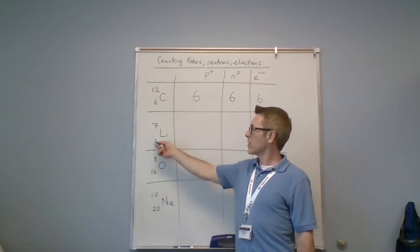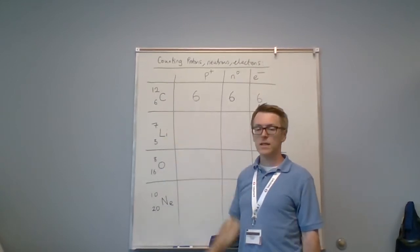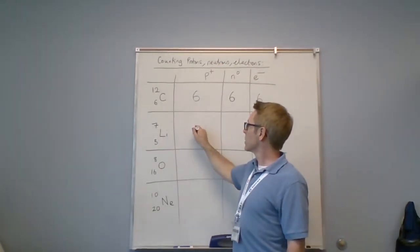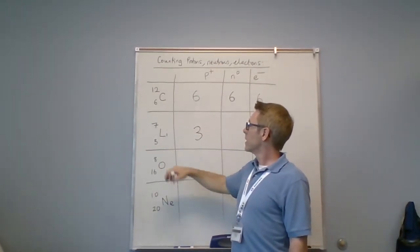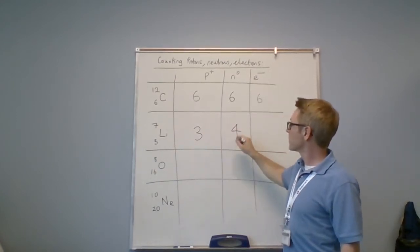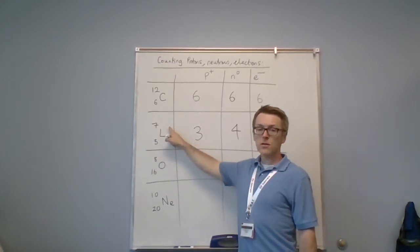For lithium, I know that 3 is smaller than 7, so 3 must be equal to the Z number. So the number of protons is 3. 7 minus 3 is 4, so there are 4 neutrons. There's no charge.